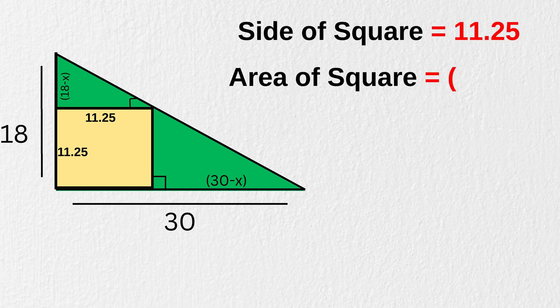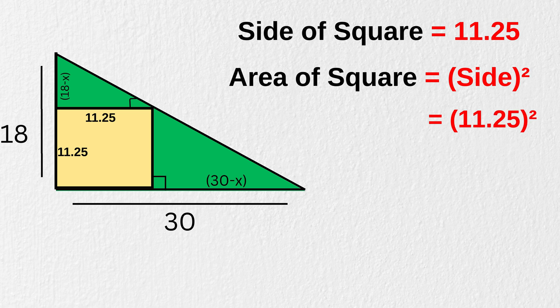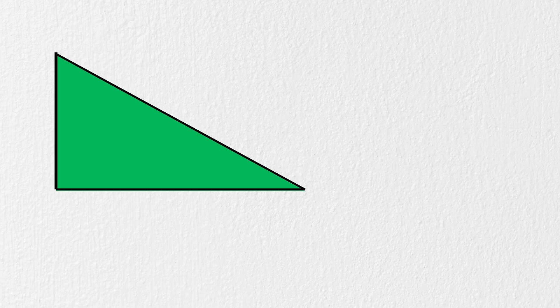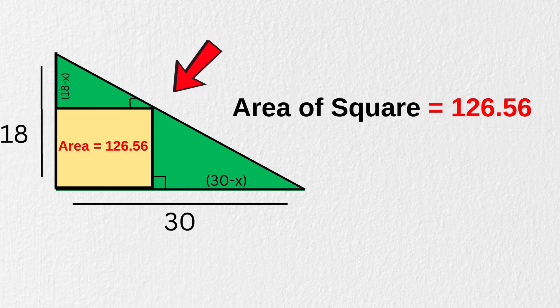And finally, since the area of a square is just the square of its side, we do 11.25 times 11.25 equals 126.56. That means the area of the square is 126.56 square units. And that is our final answer.